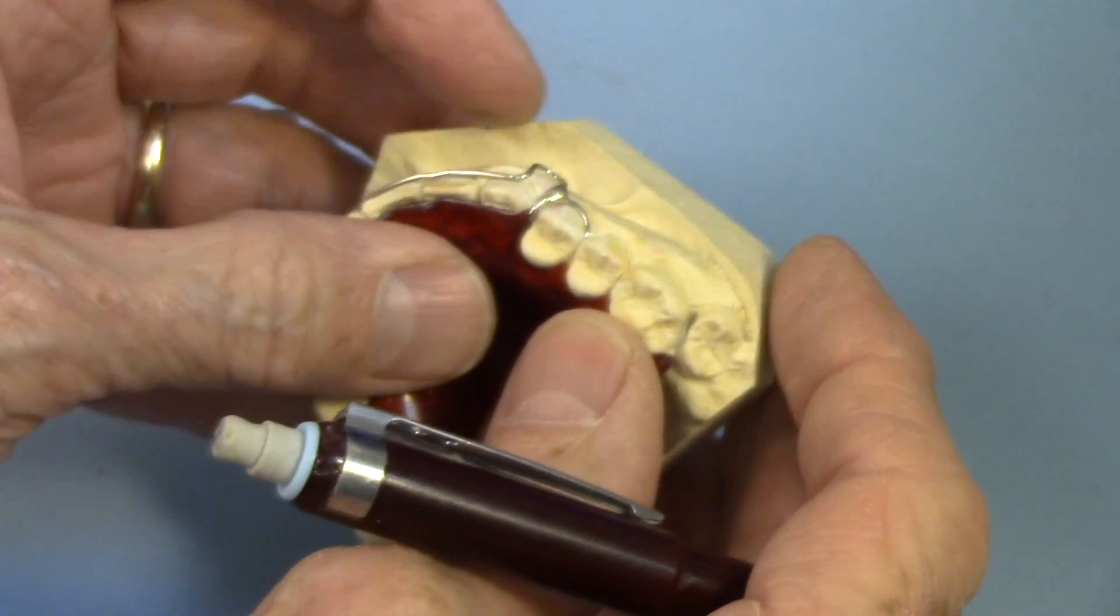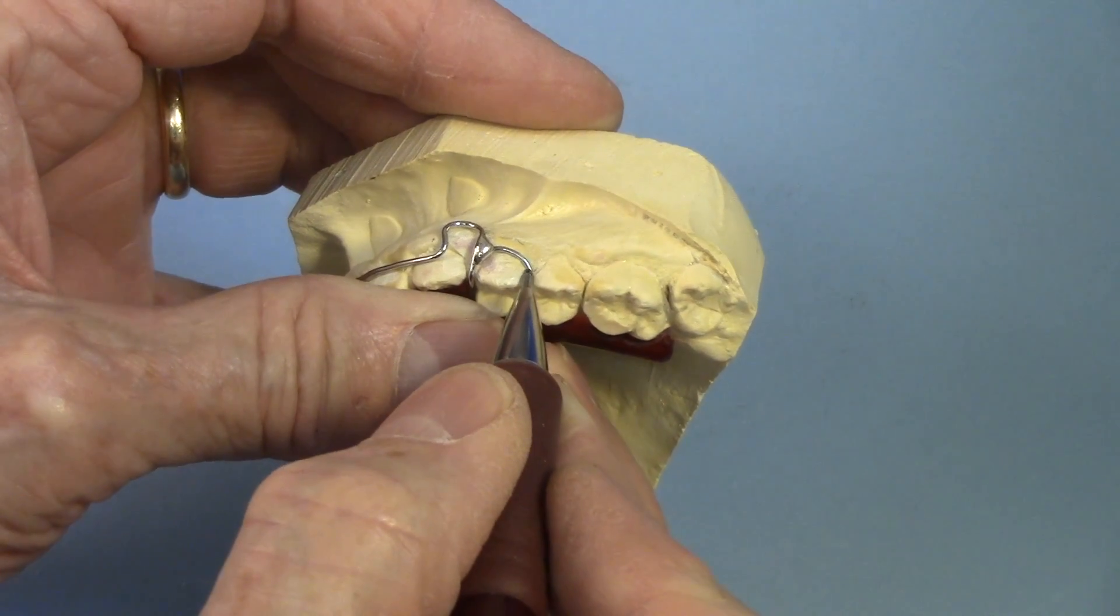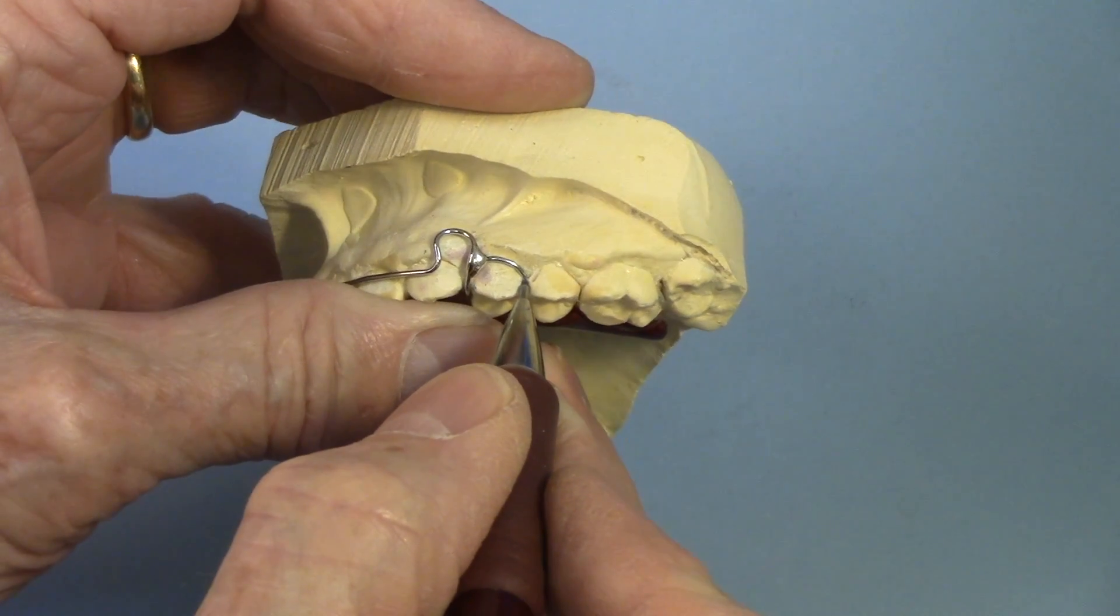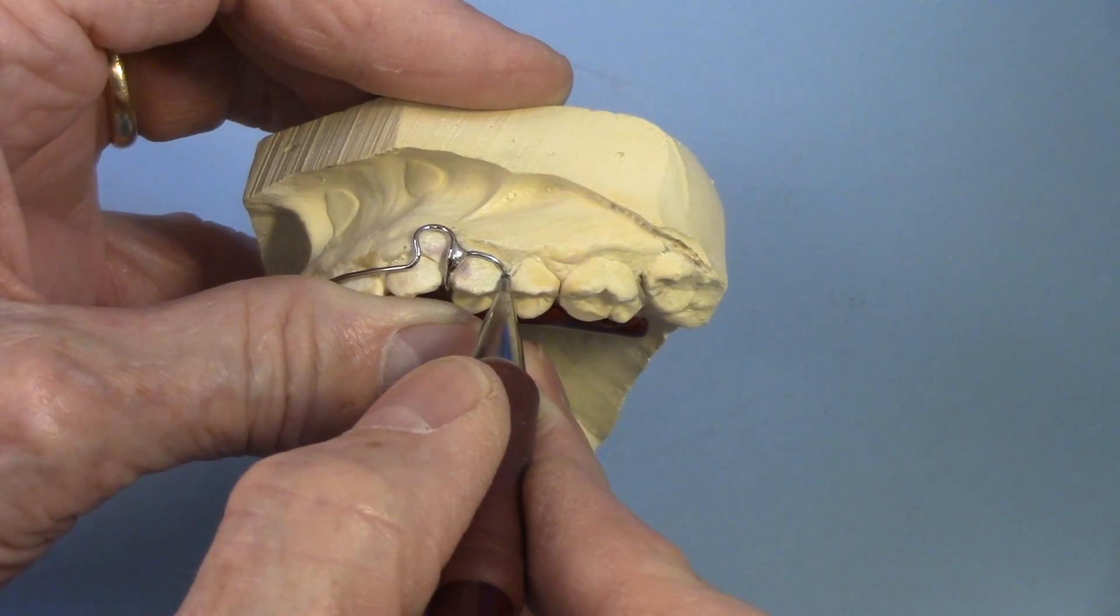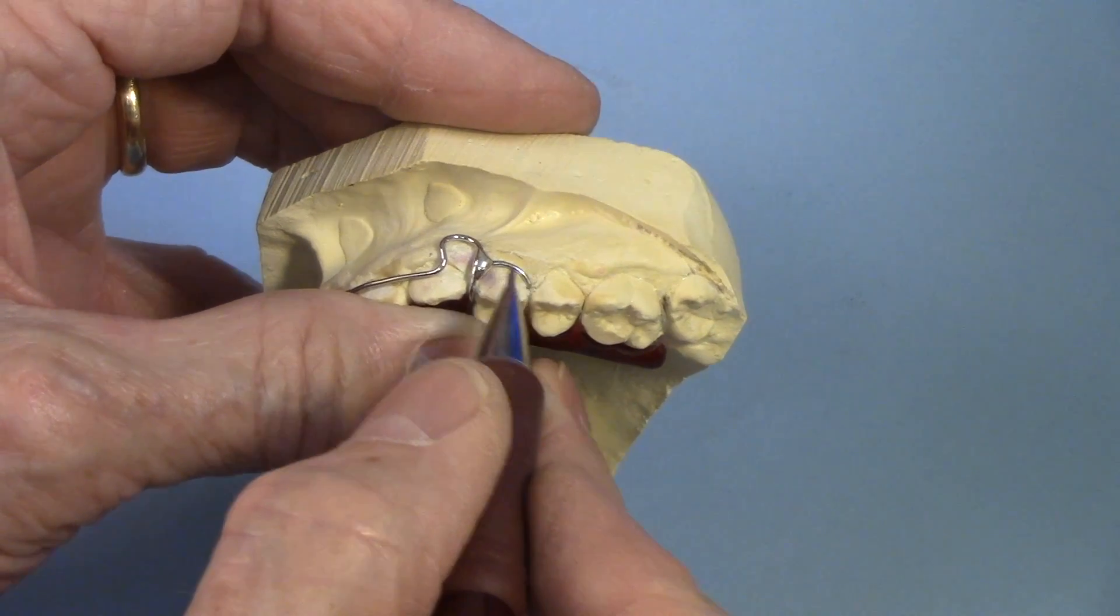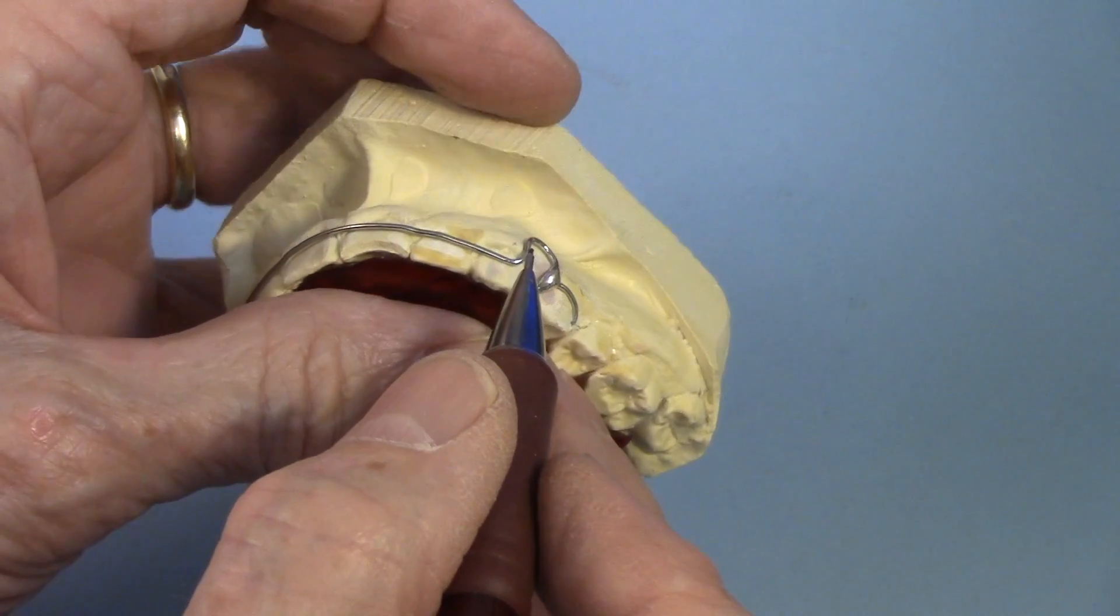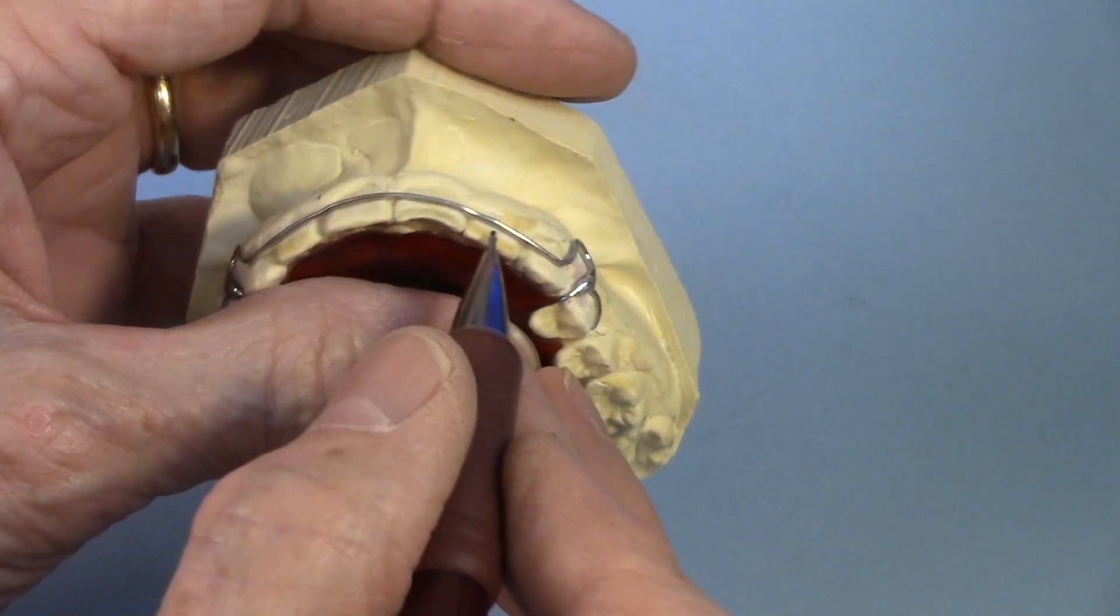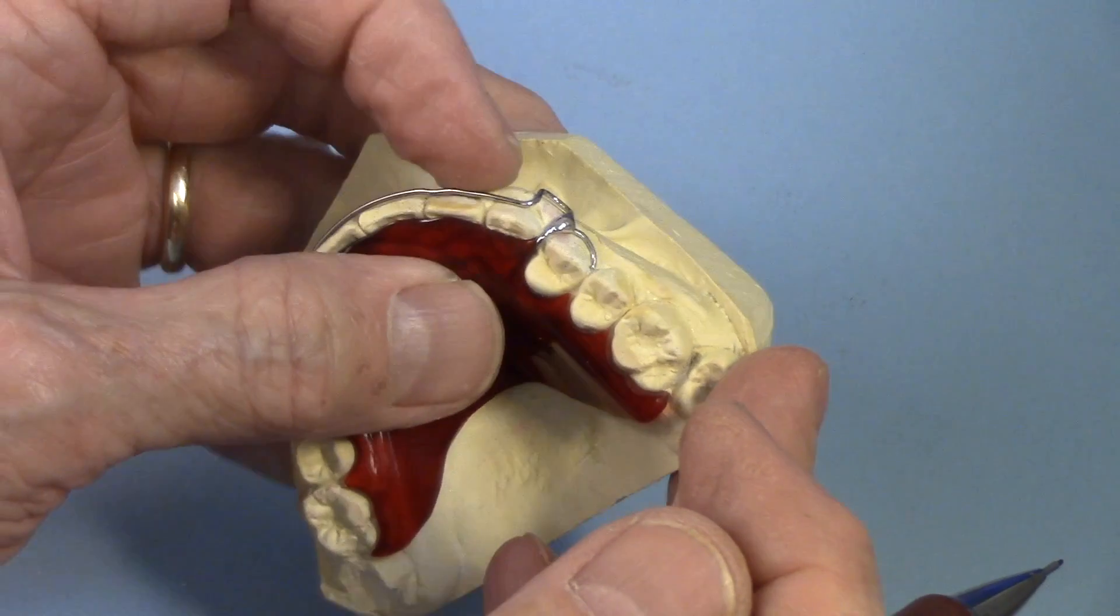But now, if you have a clasp that's like this soldered circumferential clasp here. It is just a freestanding wire and its retentive value comes from the end of this tucking into the embrasure. Now, if this were a soft wire, it would bend real quickly. So this has to be a spring hard wire. But you could have it soldered to a cobalt alloy wire or a soft nickel chromium wire if there's no movement needing to be done with the anteriors. If it's just for a retentive value only.